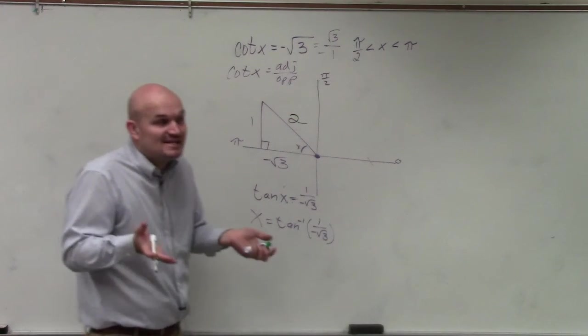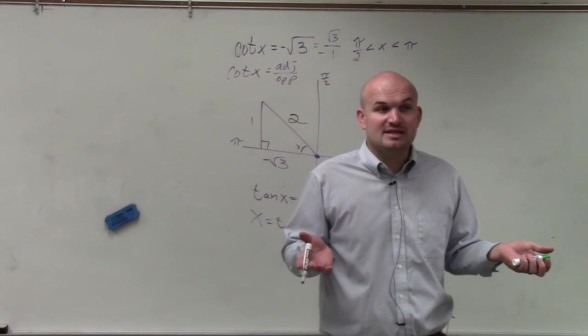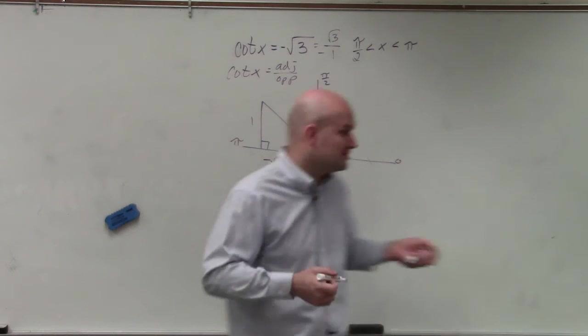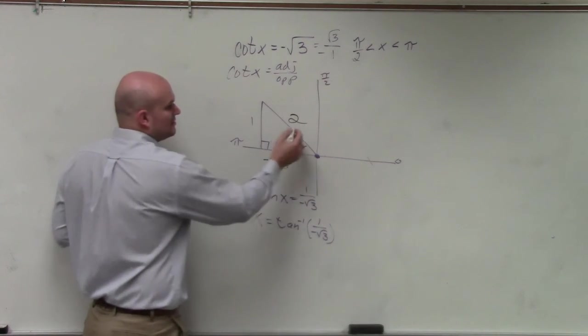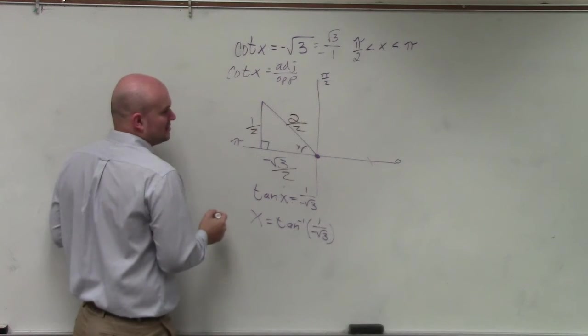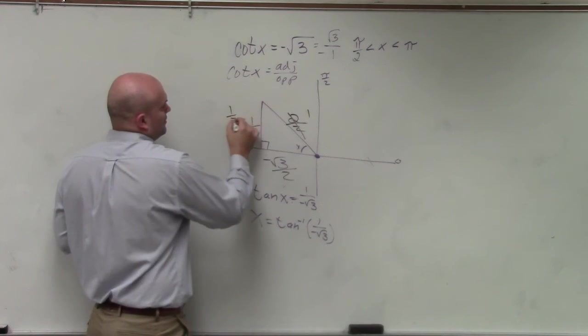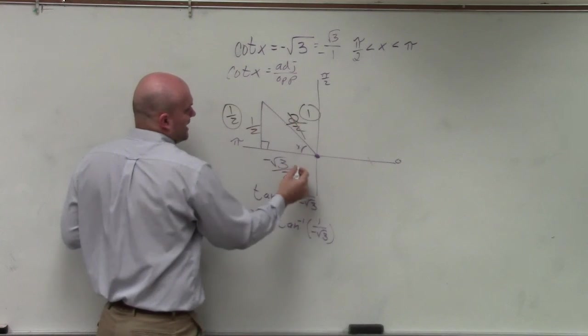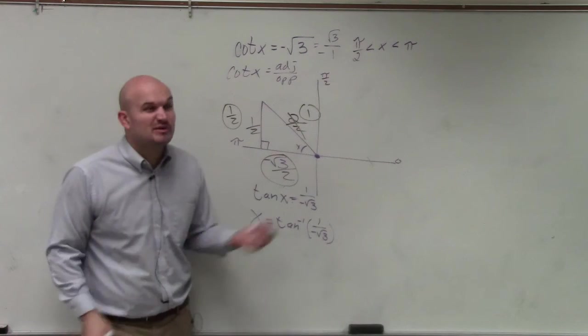That means this side would be 2, right? Since all 30-60-90 triangles and 45-45-90 triangles are similar, you can always divide and multiply by multipliers. So, in reality, I really have 1, 1 half, and negative square root of 3 over 2.